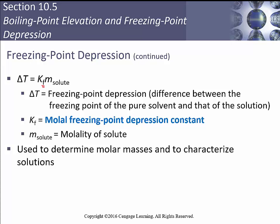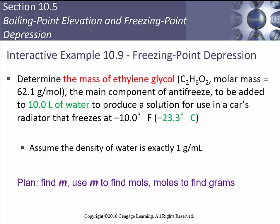Here ΔT is the freezing point depression — the difference between the freezing point of the pure solvent and the new solution. Kf is the molal freezing point depression constant, and m is the molality of the solute. We can find the new freezing temperature, calculate molality from a measured freezing point, determine molar mass, or find Kf experimentally by measuring ΔT and molality.